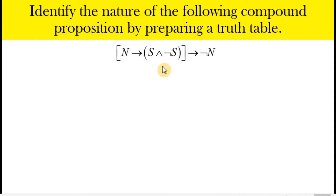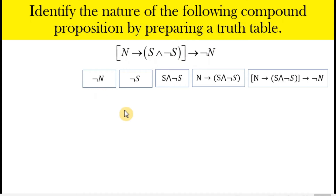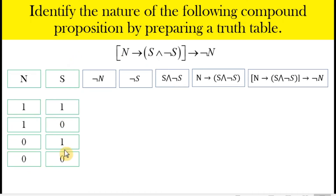Let's provide an example. Given a compound proposition, our goal is to identify whether it is a tautology, a contradiction, or a contingency. Since this is a complex proposition, we break it down into simpler propositions to make identifying truth values easier. We have separate columns for not n, not s, then s and not s, then part of the proposition, and finally the full given proposition. We have two simple propositions — n and s — so there are four possible combinations of their truth values.